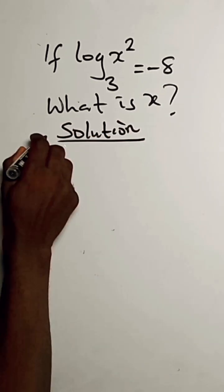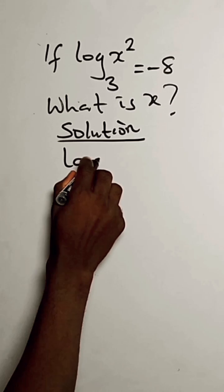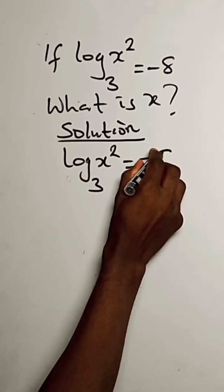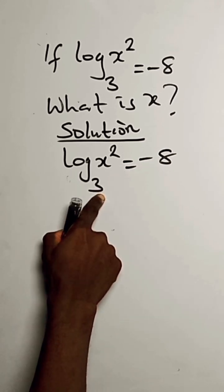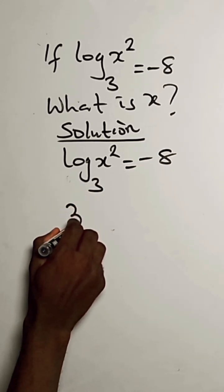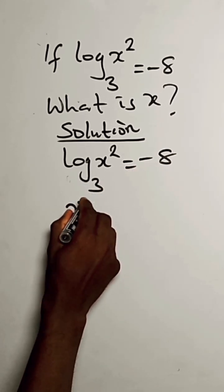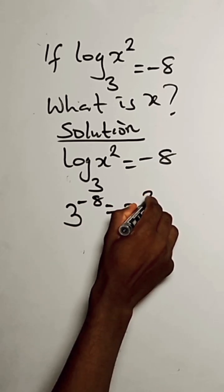So we have log x squared base 3 equals minus 8. We have to turn this to exponents. So here we have 3, which is the base, minus 8 is the power, equals x squared.